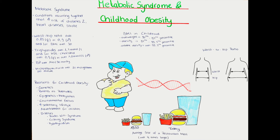Of course, there are also disease-related factors leading to obesity in children. These diseases include genetic diseases such as Prader-Willi syndrome, endocrine diseases such as Cushing's syndrome and hypothyroidism, but also diseases that require the intake of medications that can increase the weight of the pediatric patient.